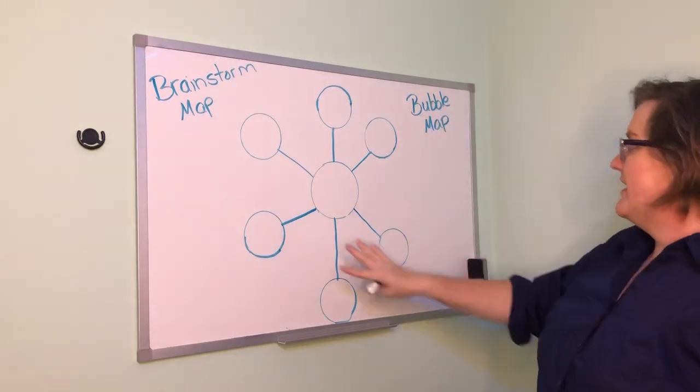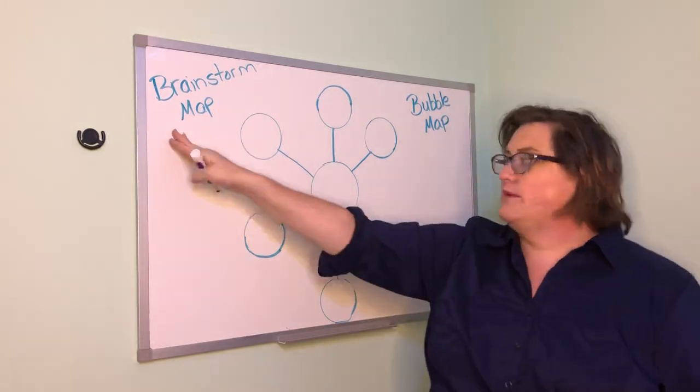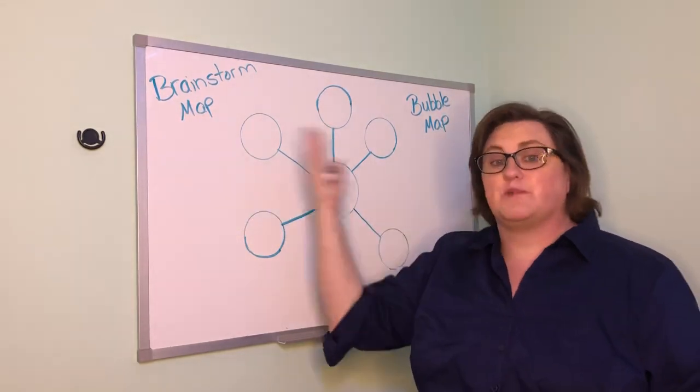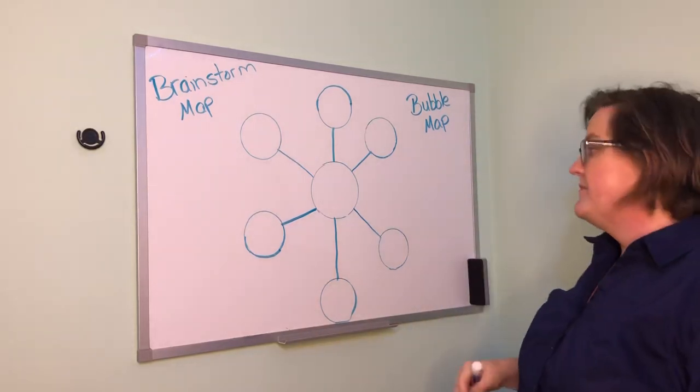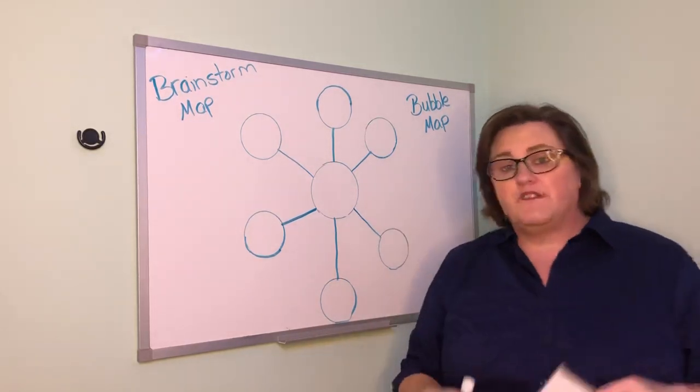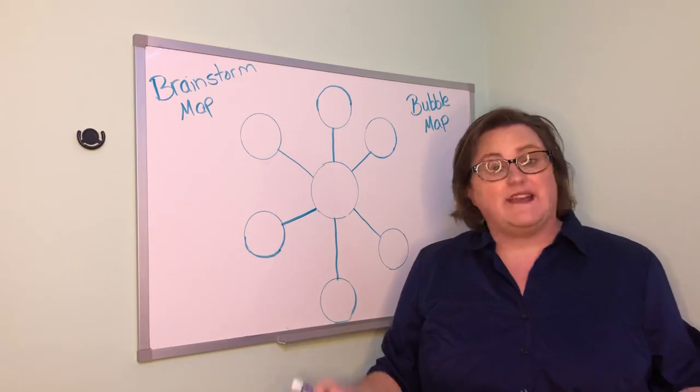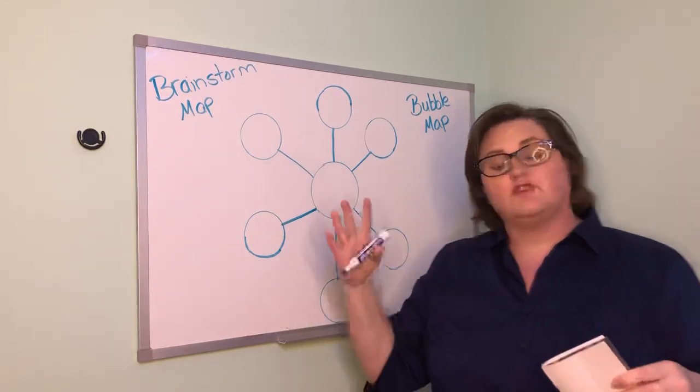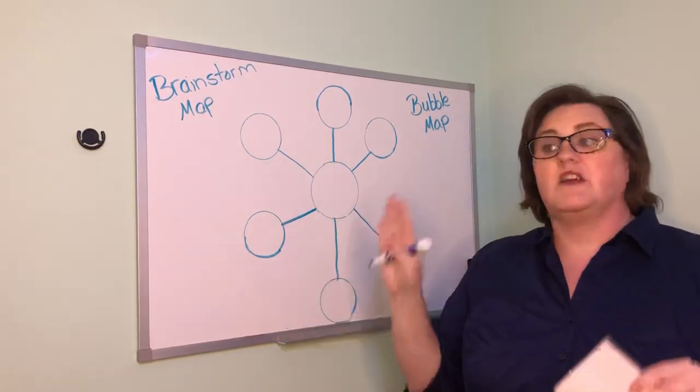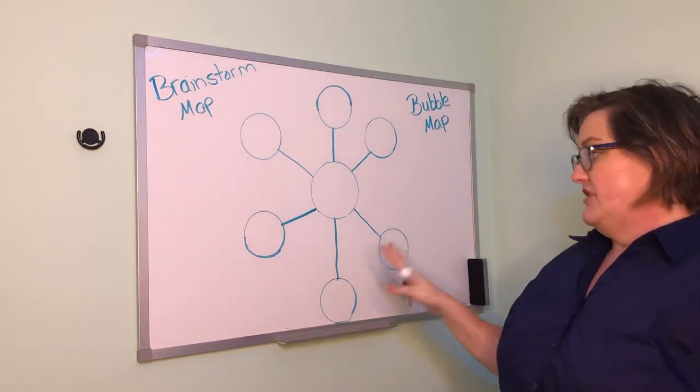Now this is what we call a bubble map, also known as a brainstorm map because you are brainstorming ideas from your book. This is very helpful if you are getting ready to write a research paper to organize your thoughts. It's a graphic organizer to help you organize your thoughts.